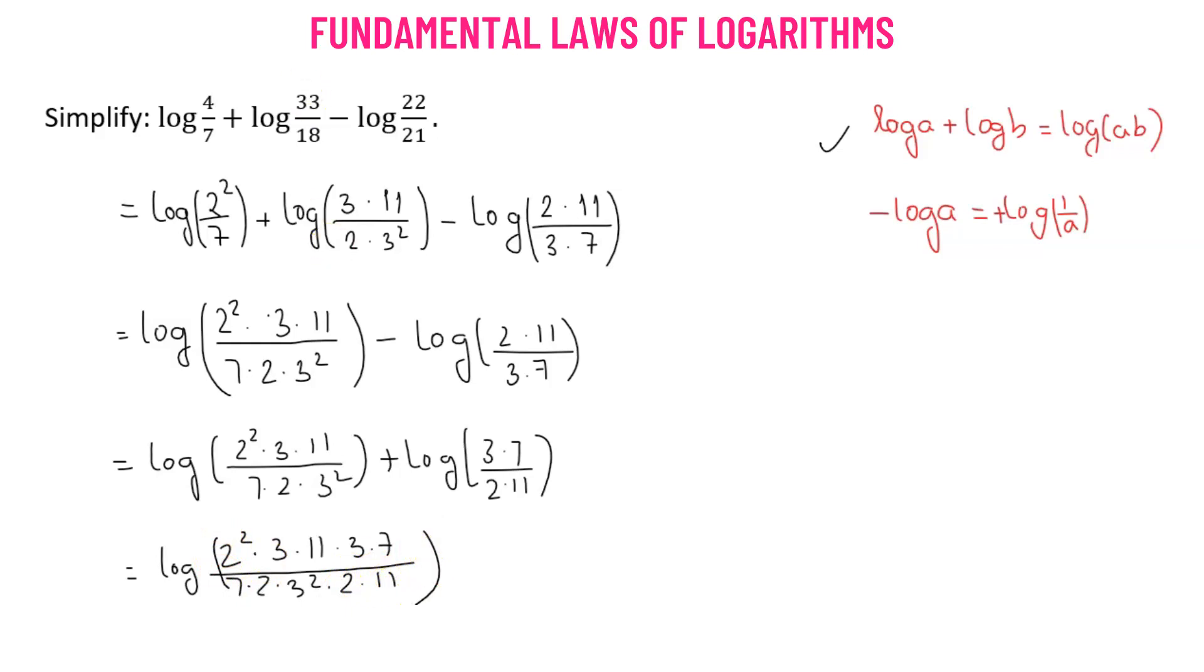Now we see the terms canceling out. We have 2 squared, and there are two 2's in the denominator, so they cancel out. The 3's cancel with 3 squared, 11 and 11 cancel, 7 and 7 cancel, leaving us with 1. So we have log of 1.